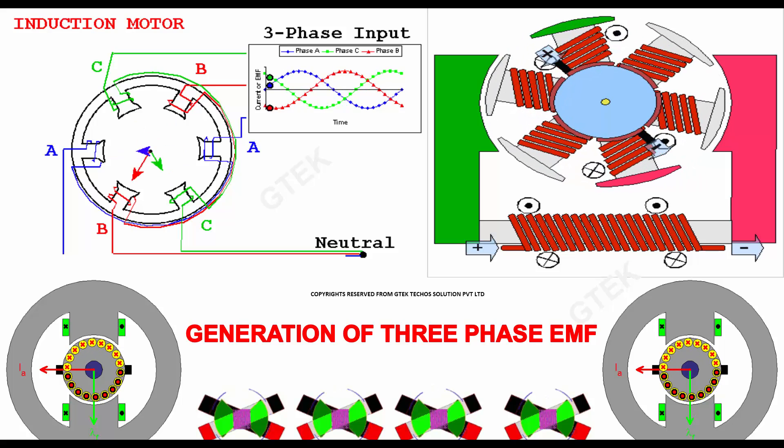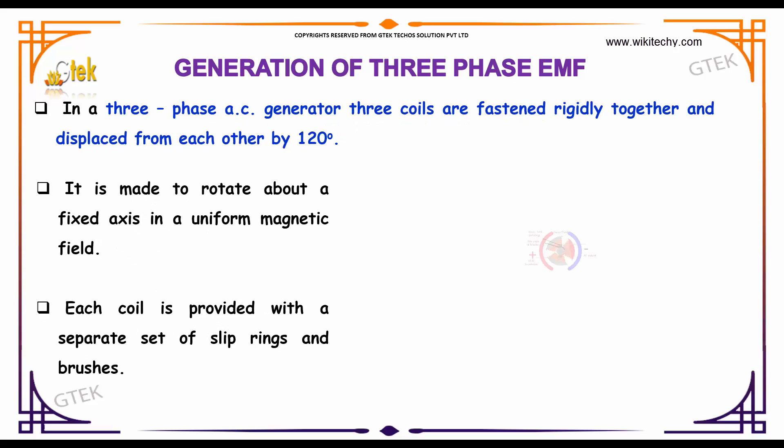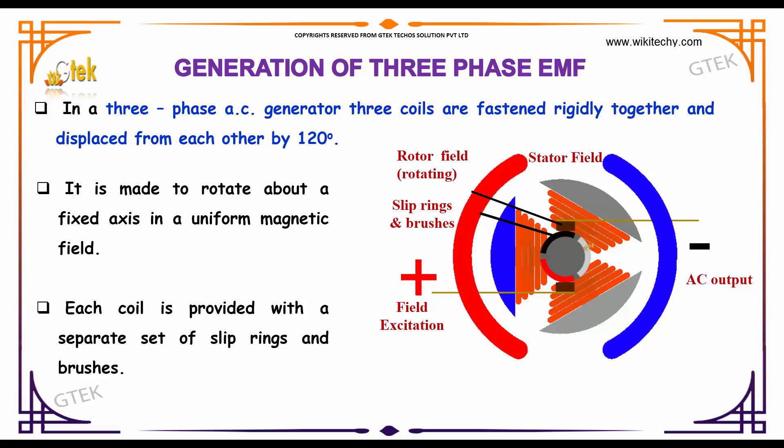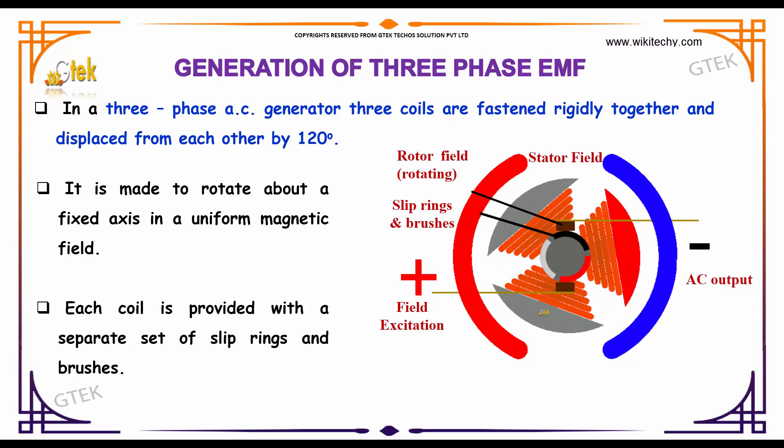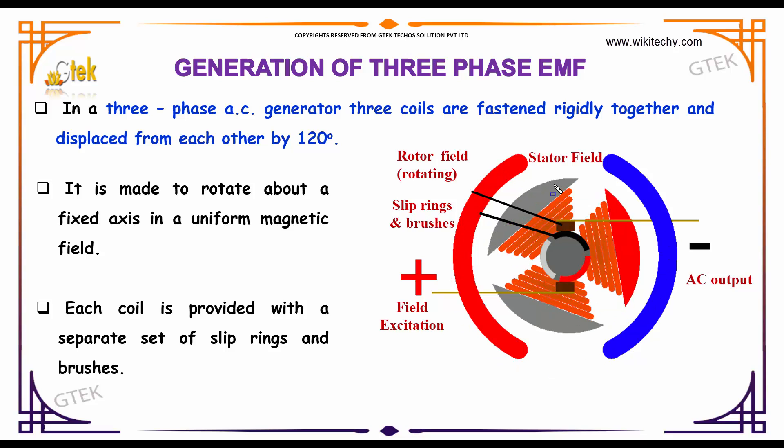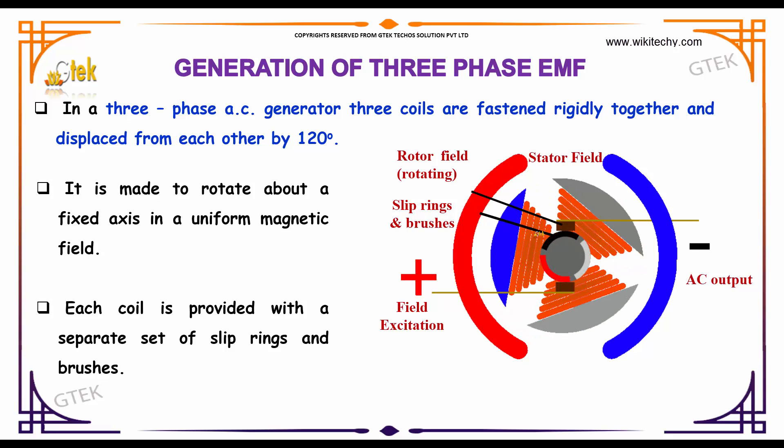Now we will talk about the generation of 3-phase EMF. In any 3-phase AC generator, 3 coils are fastened rigidly together and displaced from each other by 120 degrees. It is made to rotate about a fixed axis in a uniform magnetic field. Each coil is provided with a separate set of slip rings and brushes.